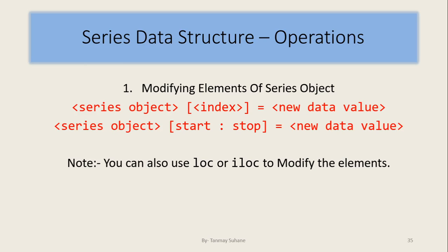We have seen how to extract slices — those slices can be changed if we assign some value to them. Using the index, we can find a value and change it with a new data value. We can use the series object with start and stop to find a slice and change all elements in that slice. We can also use loc or iloc to modify elements.